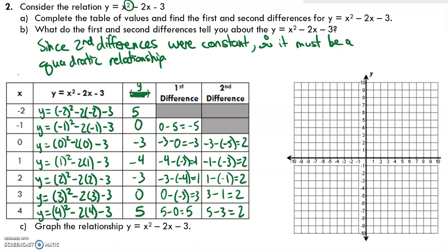Let's go ahead and graph this based on the data. Using the x values and corresponding y values: starting at (negative 2, 5), then (negative 1, 0), (0, negative 3), (1, negative 4), and then we go back up again. When x equals 4, the y value is 5. This is the parabola y equals x squared minus 2x minus 3.